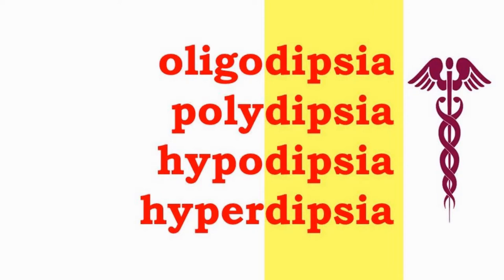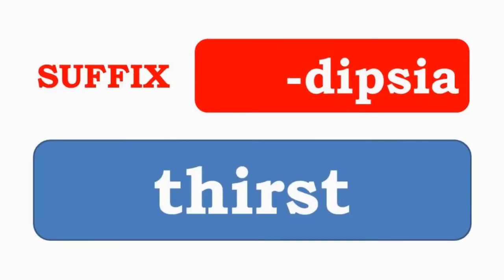Oligodipsia, Polydipsia, Hypodipsia, and Hyperdipsia have the suffix -DIPSIA, which indicates thirst.